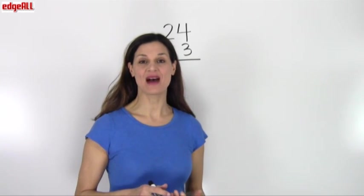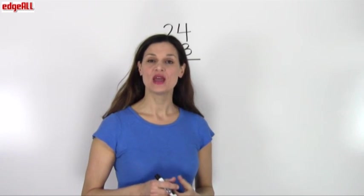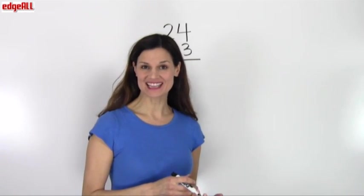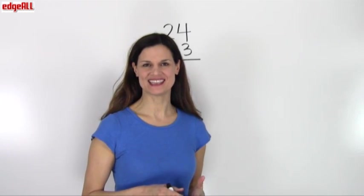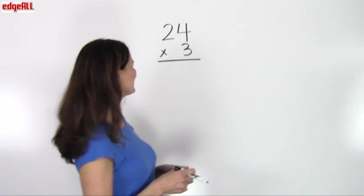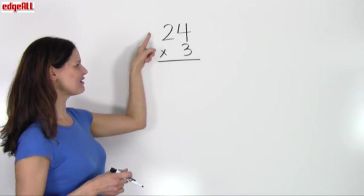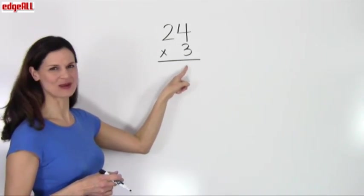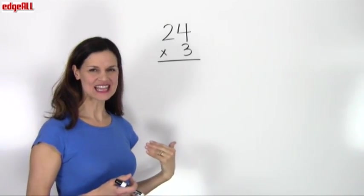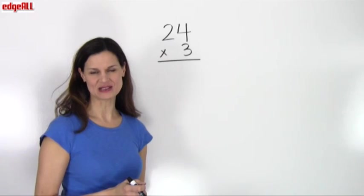If you have learned how to multiply by one-digit numbers, you've probably run into a problem where the product of two of your digits is greater than 10. Let's look at what we do when we have a problem like this: 24 times 3. I've lined it up vertically, my ones places are all lined up, and I can get right to work.